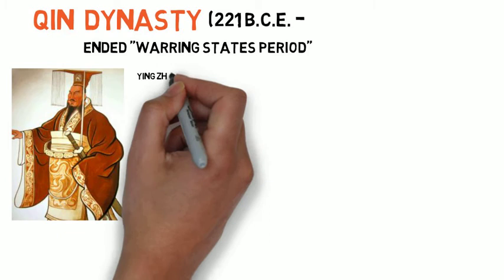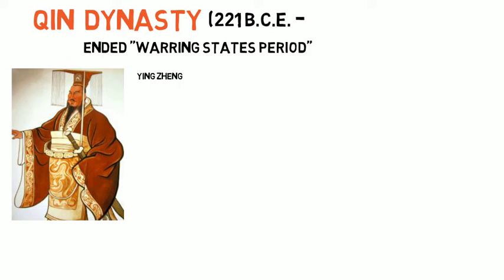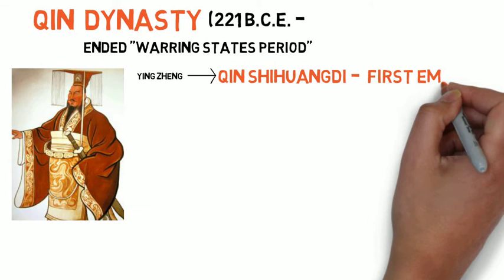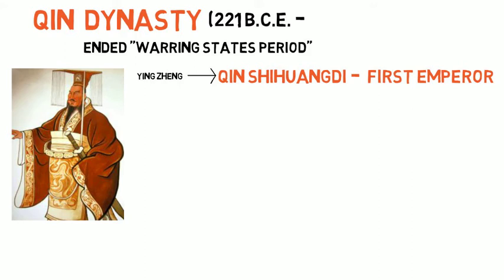After he defeated his enemies and thwarted an assassination attempt, in 221 BCE, Ying proclaimed himself Qin Shi Huangdi, or First Emperor. Although he ruled for only 11 years, he paved the way for a unified China.